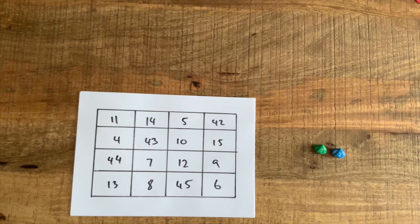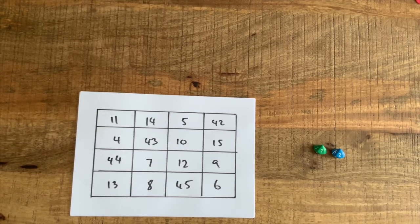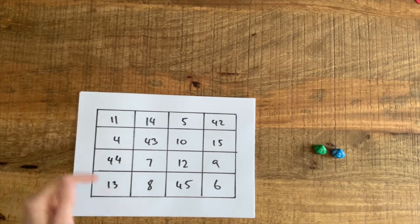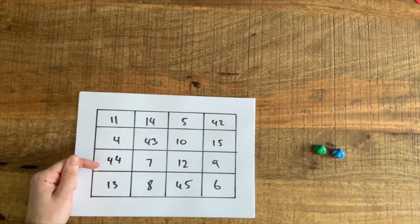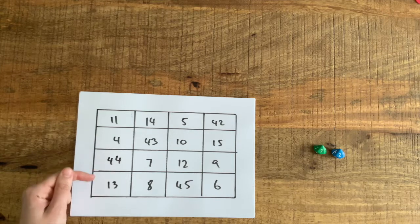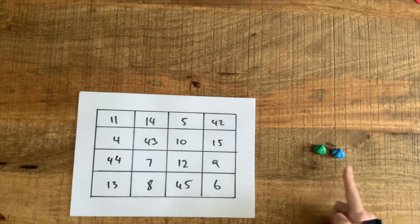Now that's all great but what makes it a magic square is the fact that if I do this 11 plus 4 is equal to 15 plus 44 is equal to 59 plus 13 is equal to 72.